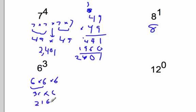And always when you're doing these out, just like I did up here, do them out off to the side. And then finally, 12 to the 0 is going to equal 1.